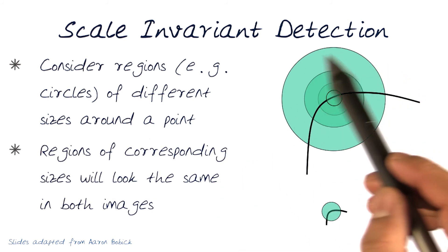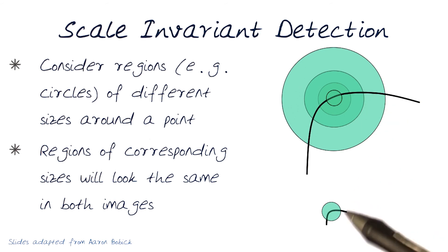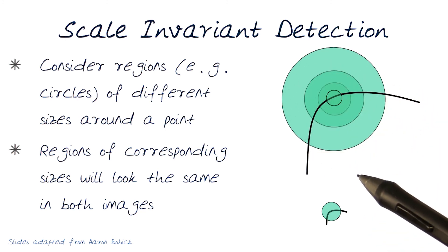So the basic idea here is the region of corresponding sizes will look the same in both images, as long as I can come up with that scale. This does require coming up with a process that lets me find the right size of the view region that would let me compare this scale to this one.